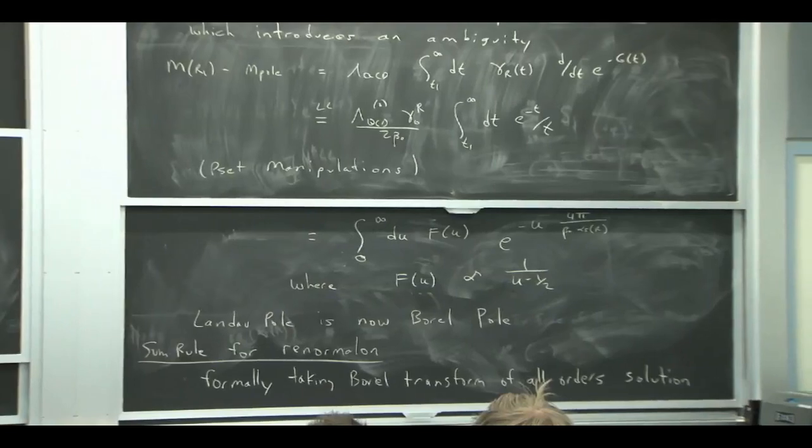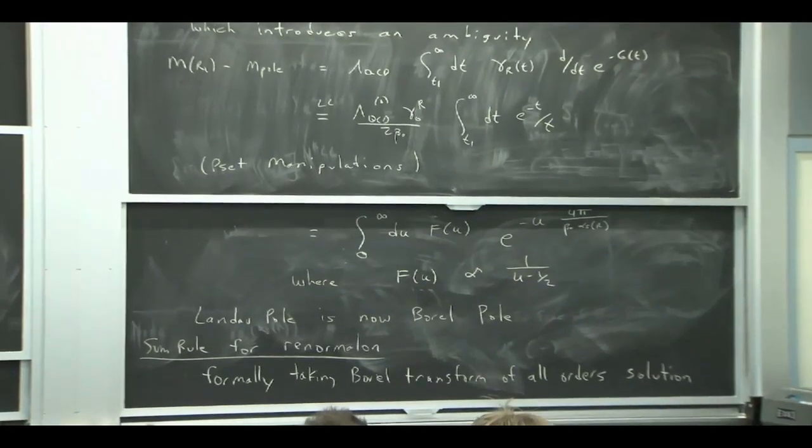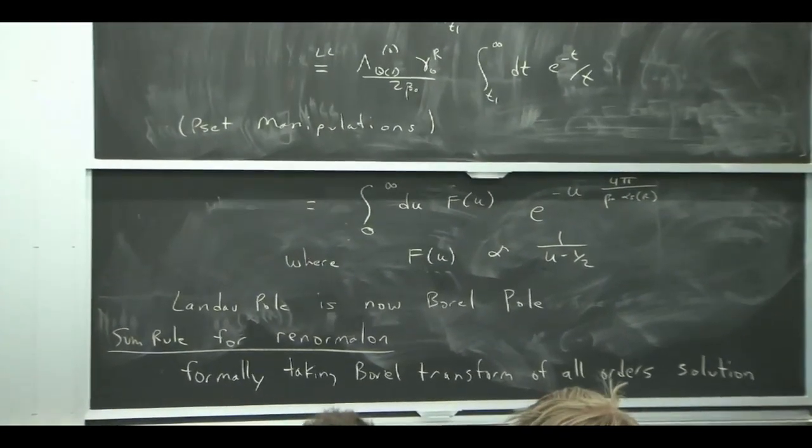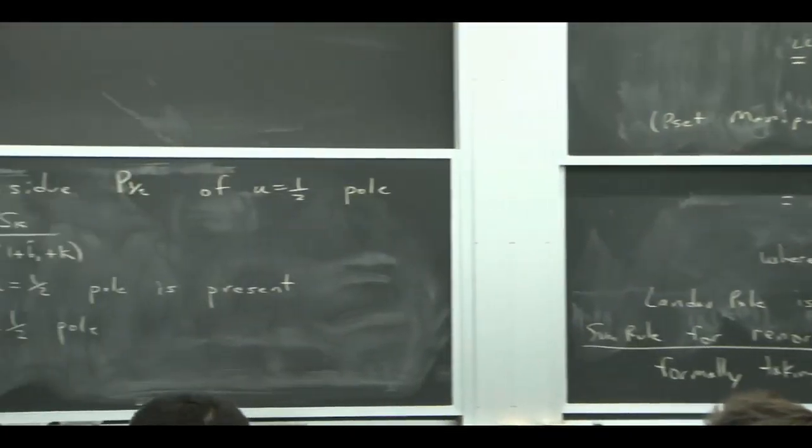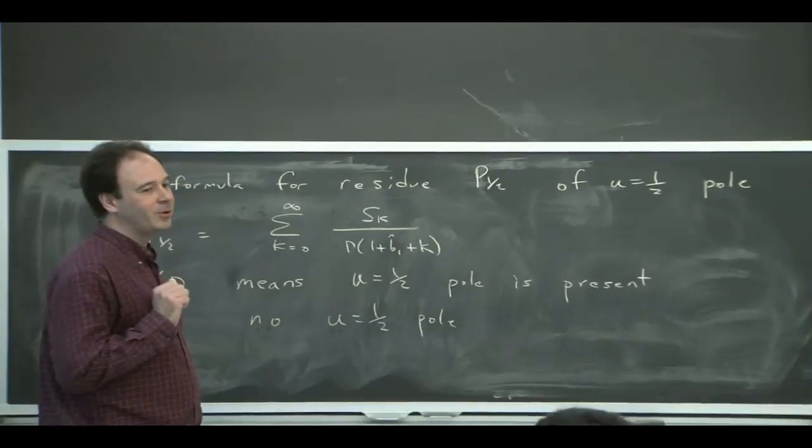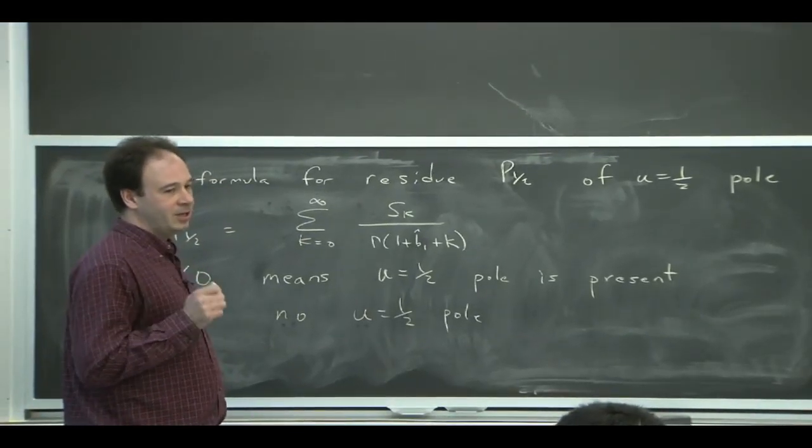So what happened to the other? Right. So what we've done here, and actually, I'm just going to come to this, but I'll foreshadow. So what we've done here is we set up a construction to remove the U equals a half pole. And we did not remove any higher poles.